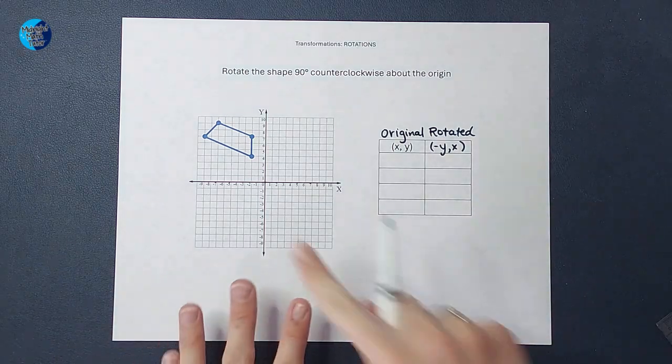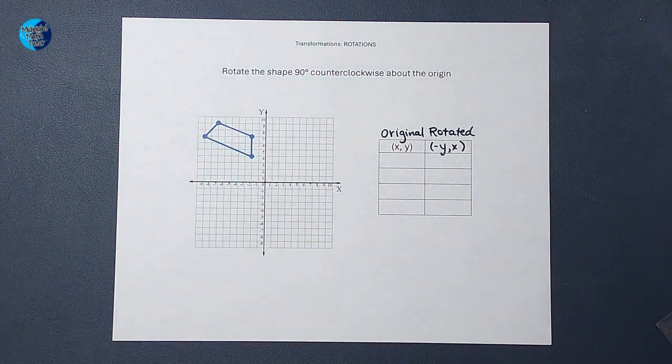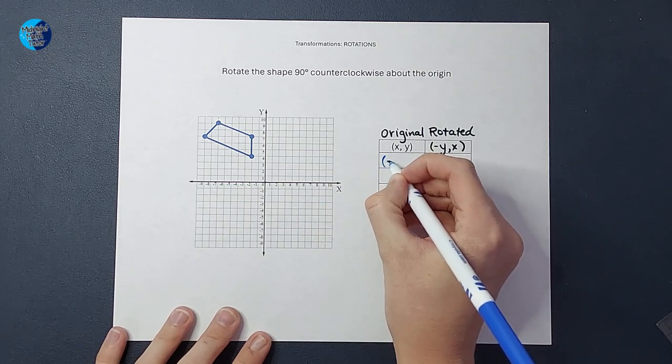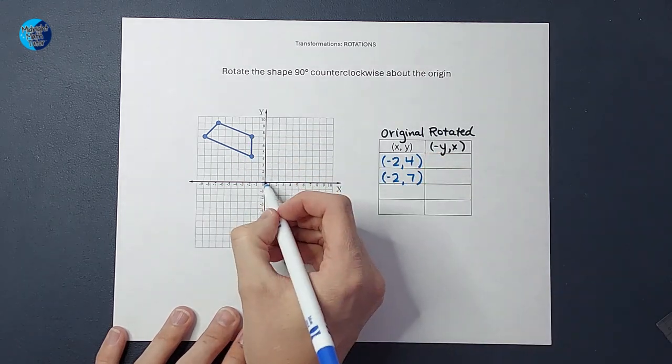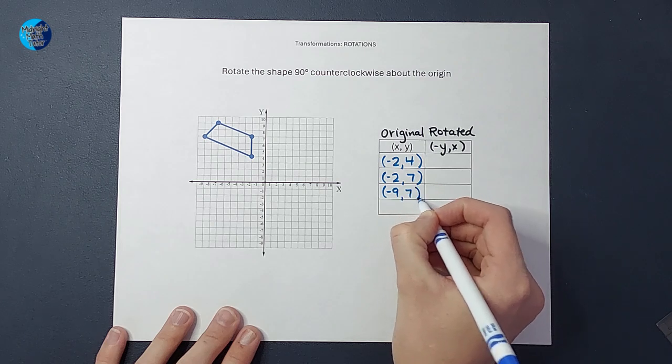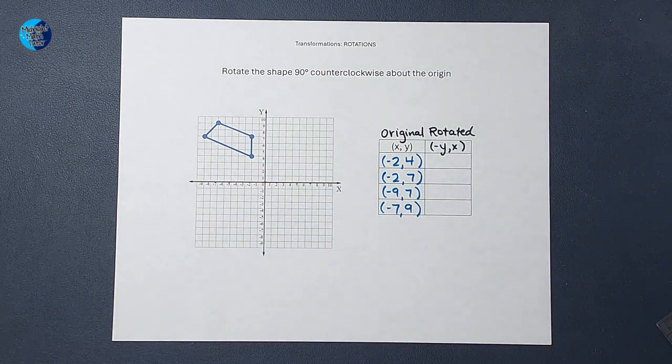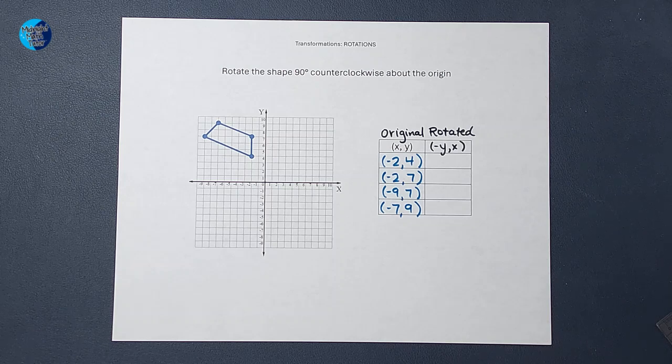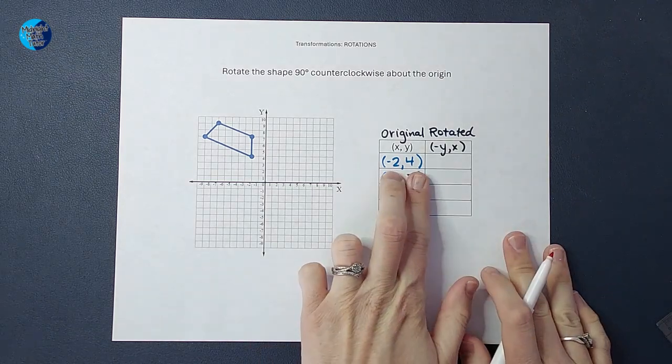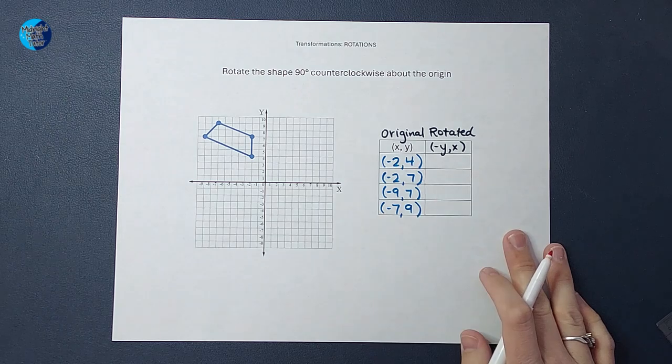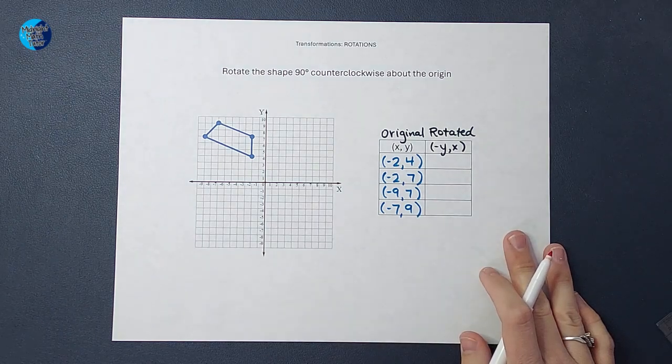Okay, so first thing I'm going to do is figure out what all of these ordered pairs are. Okay, there are those points. So now what I'm going to do is I'm going to flip them and change the original y's sign.